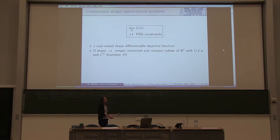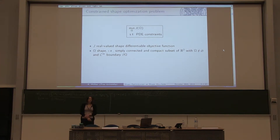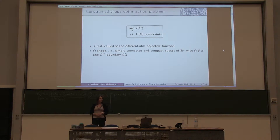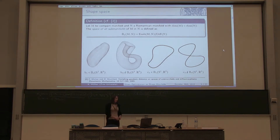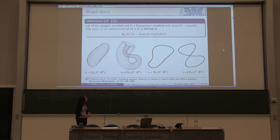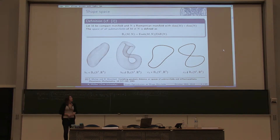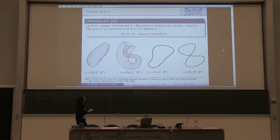We want to minimize the real-valued shape differential objective function with respect to shape, where the minimization problem is constrained by a PDE. We consider 2D shapes — simply connected and compact subsets of the plane with smooth boundary. The set of all these shapes was defined by Michor and Mumford as the set of all equivalence classes of embeddings of the unit circle into the plane, where the equivalence relation is defined by the set of all diffeomorphisms of the unit circle into itself. Here you can see two shapes: this one lies in the shape space, and this one does not.